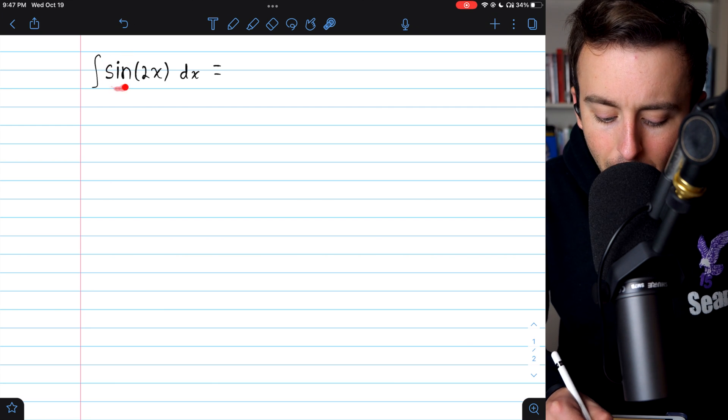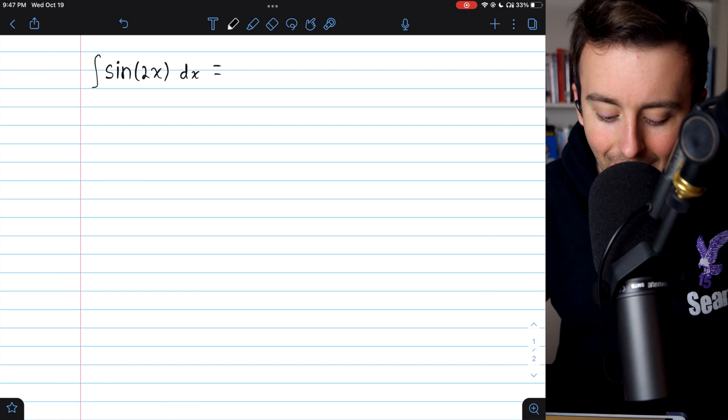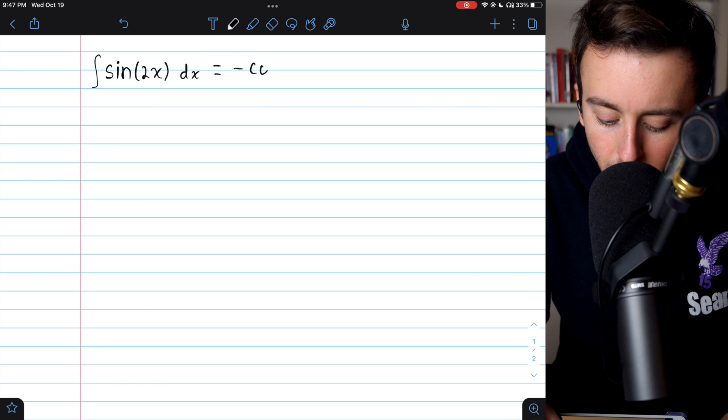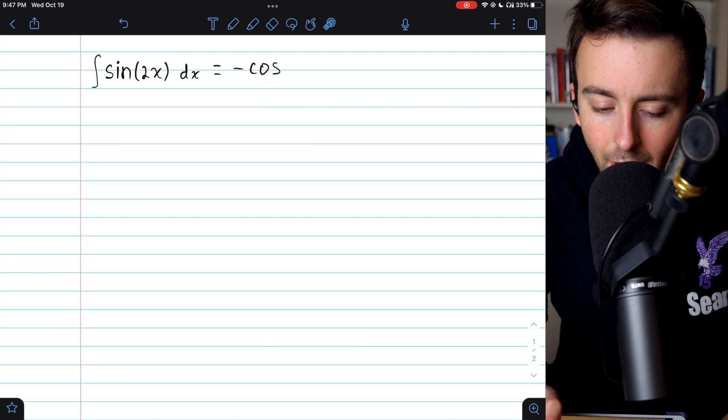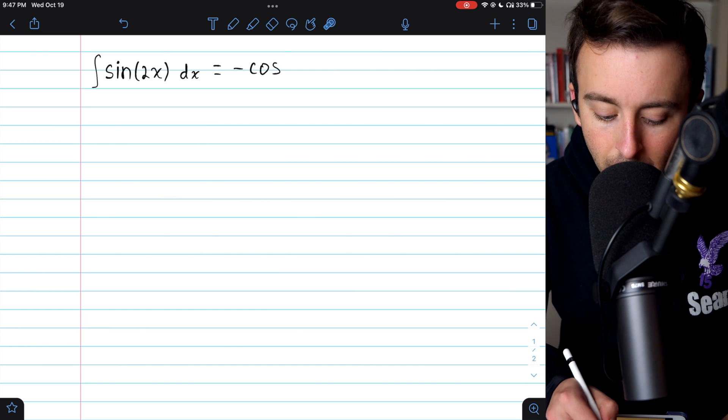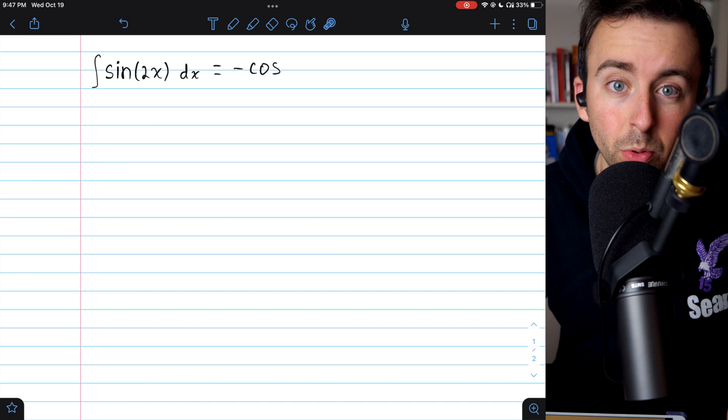We just have to think about the integral of the outside function, for starters. In this case, that's negative cosine. Remember, that's because the derivative of cosine is negative sine. We don't have negative sine though, so we need to throw on a negative so those would cancel out.